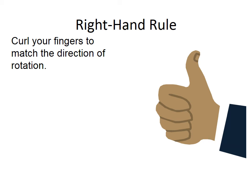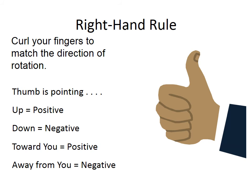If your thumb is pointing up, it's positive. Down is negative. Towards you is positive, and away from you is negative. And if you're saying to yourself, 'What does that all mean?' let's take a look at some examples.